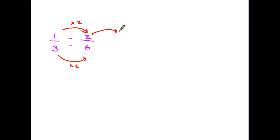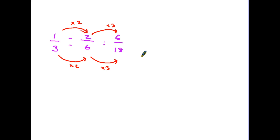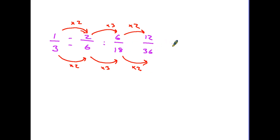Let's go again and multiply the top — this time by three. If we multiply the top by three, we have to multiply the bottom by three. Two times three is six, and six times three is eighteen. This looks like a more complicated fraction, 6/18, but it is equivalent to two sixths and to one third. I will go again and multiply the top by two, therefore multiplying the bottom by two: six times two is twelve, and eighteen times two is thirty-six. We can continue doing this to find more and more equivalent fractions.